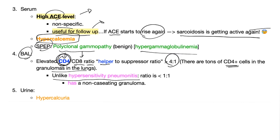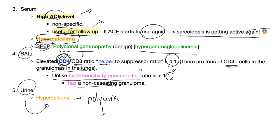Unlike hypersensitivity pneumonitis, where the ratio is less than 1 to 1 — meaning there are more CD8 cells than CD4 cells, even though HP also has non-caseating granuloma. In sarcoidosis you'll also find hypercalciuria, polyuria, and possibly kidney stones. What type? Calcium kidney stones. If it's calcium oxalate, the urine is usually acidic; if it's calcium phosphate, the urine is usually alkaline.